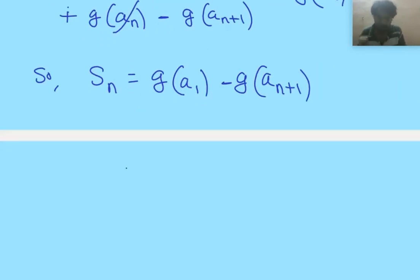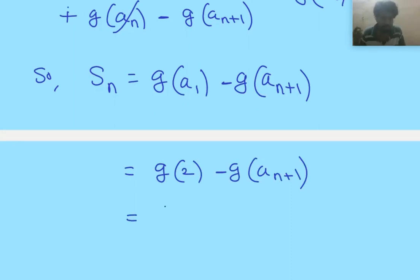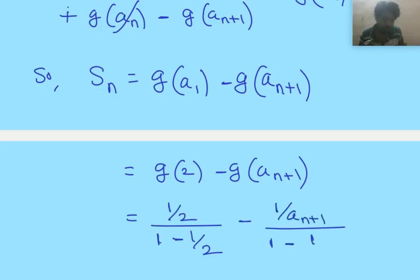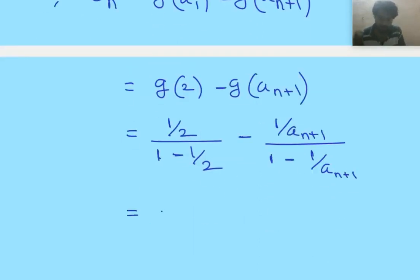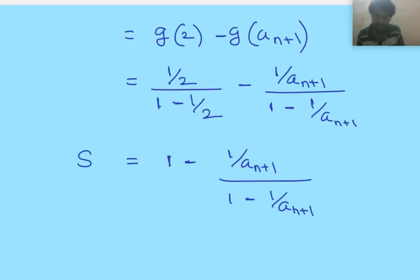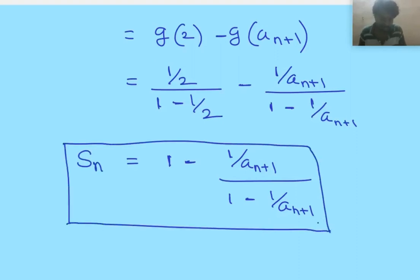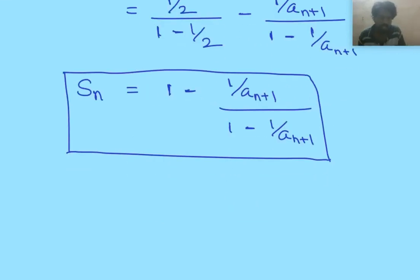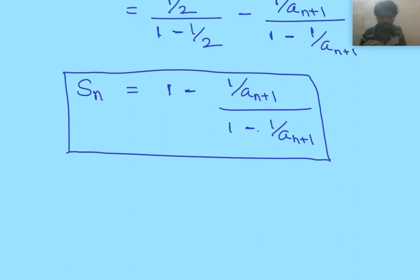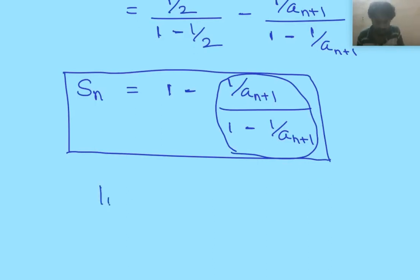Since a_1 is 2, this is g(2) minus g(a_{n+1}). By the definition of g, g(2) evaluates and g(a_{n+1}) is (1 by a_{n+1}) divided by (1 minus 1 by a_{n+1}). This reduces to 1 minus (1 by a_{n+1}) divided by (1 minus 1 by a_{n+1}), which is the sum of first n elements. We know as n tends to infinity, a_n also tends to infinity, so 1 by a_{n+1} tends to 0. Therefore the limit of S_n as n tends to infinity is simply 1 minus 0, which equals 1.